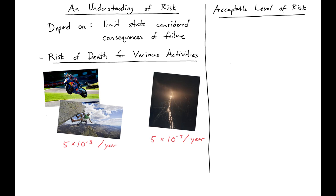We have several different levels. First, we have 10 to the negative third per year — about 1 in 1,000 people per year dying — and this would require immediate action. This would be an unacceptable level of risk.